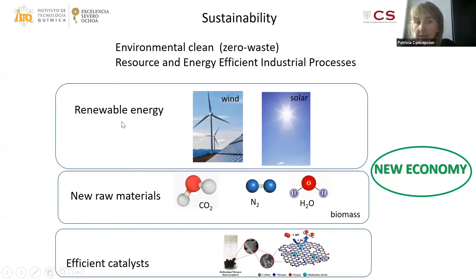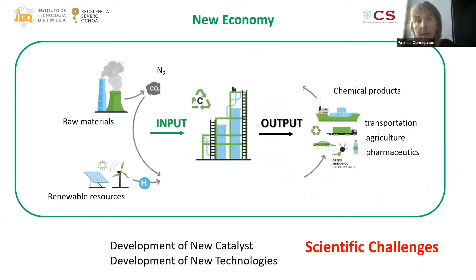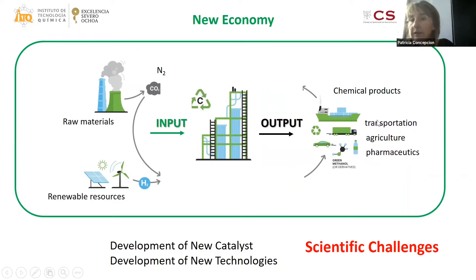In this scenario, renewable energies and the use of new raw materials like CO2, nitrogen, water, and biomass, combined with the development of efficient catalysis, are the key points of the new economy. This new model would have inputs from renewable resources and new raw materials, with outputs being chemical products suitable for transportation, agriculture, and pharmaceutics. To achieve this model, which is very challenging, we need to develop new catalysts and new technologies.